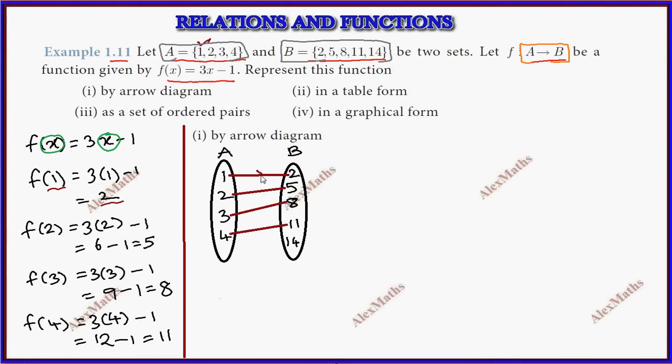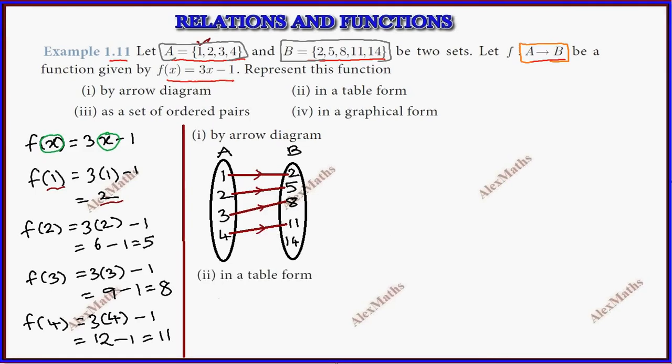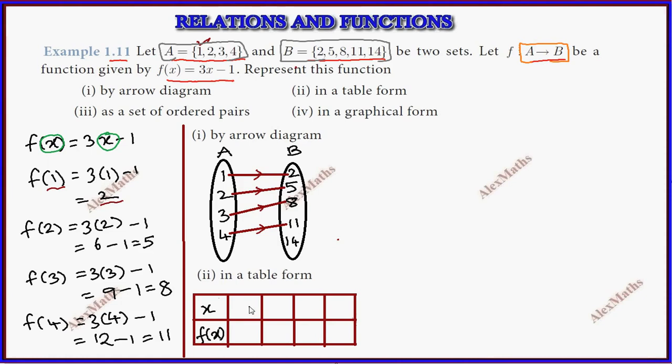The second representation is table form. Table form: x and f of x. X value 1, corresponding f of x is 2. X value 2, f of x is 5. 3 is 8. 4 is 11.